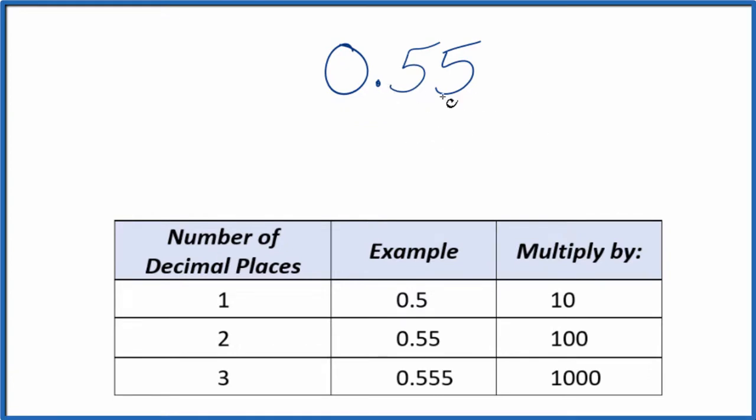First off, let's call it 0.55 over 1. It's still 0.55, we've just divided by 1. Now we have the start of a fraction.